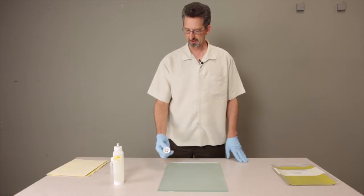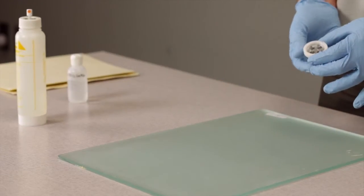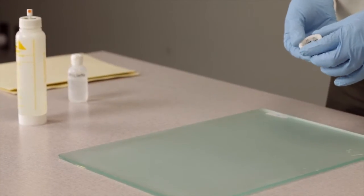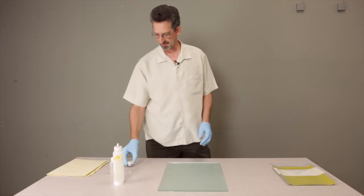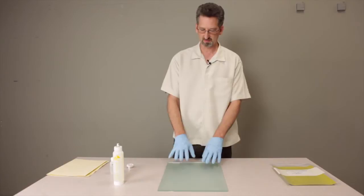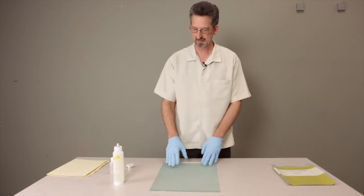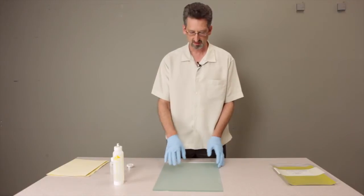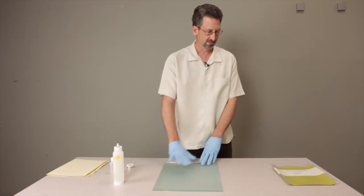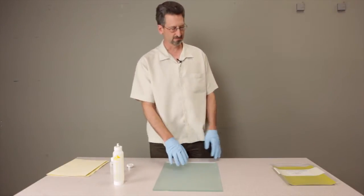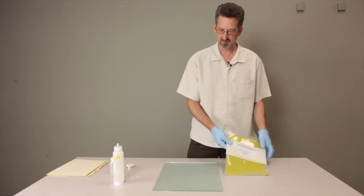All right, our next step in preparation is to polish the sample. We'll start with preparing this glass plate so that it will stay on to the table. We're going to use that as our very flat surface for our aluminum oxide abrasive.